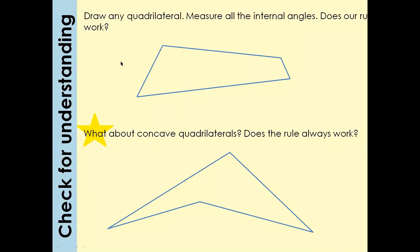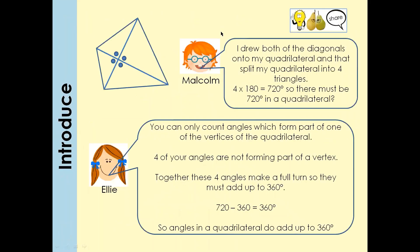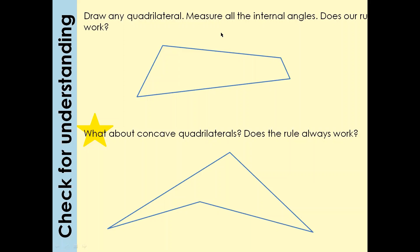So what is a quadrilateral? A quadrilateral is a shape with four sides. If we draw any shape with four sides and measure all four angles, they all add up to 360°.